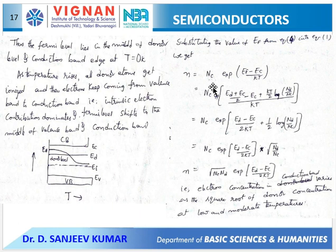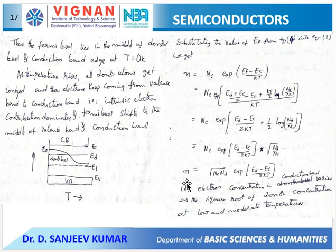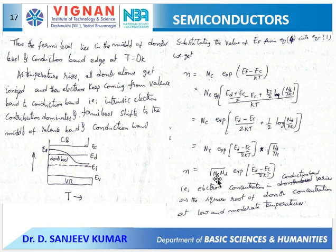Now we calculate the general expression for the number of carriers in terms of donor energies by substituting the previously obtained value of E_F. The exponential of the logarithm becomes a constant, and all other terms remain. Finally, the number of electrons in an n-type extrinsic semiconductor is proportional to the square root of the number of donor atoms times the square root of the number of intrinsic carriers, depending on both N_d and n_i.